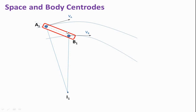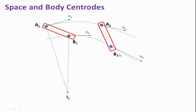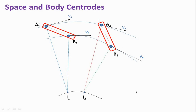For the next instant, the link moves to position A2 B2. Similarly, draw a tangent to the curve representing the velocity of A2 and the velocity of B2, as A2 B2 has a clockwise displacement. Then draw a perpendicular to VA and a perpendicular to VB. The intersection point is the instantaneous center I2 for the new position A2 B2 of link AB — this is the second instantaneous center for this particular position.